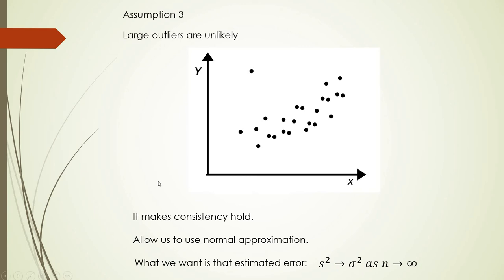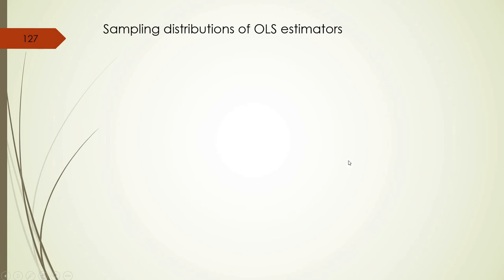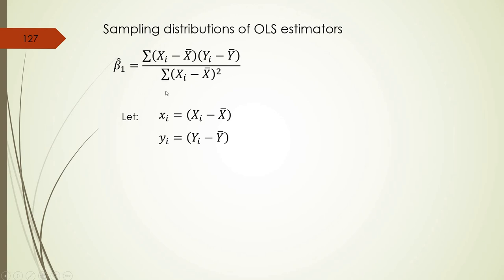So these are the three main assumptions about ordinary least squares that we expect to be satisfied in order to develop a good model. Let's talk a little bit more about the sampling distributions of OLS estimators — about beta 0 hat and beta 1 hat. This is the formula for beta 1 hat that you already saw.